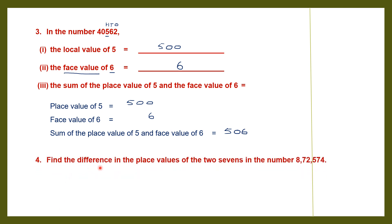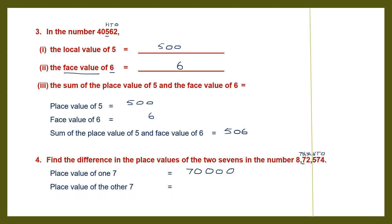Now question 4: find the difference in the place values of the two 7s in the number 872,574. There are two 7s — one 7 here and one 7 here. We have to find the place values of both 7s and then find the difference. Place value of the first 7: 1s, 10s, 100s, 1000s, 10,000s — so this 7 is in the 10,000th place, and 7 into 10,000 is 70,000. The other 7 is in the 10s place, so 7 into 10 is 70. Now we need to subtract these two numbers.